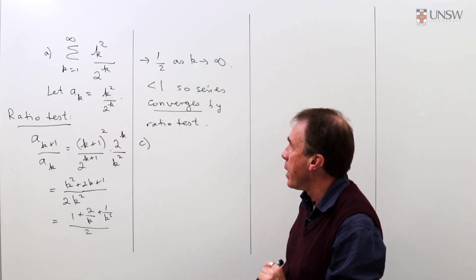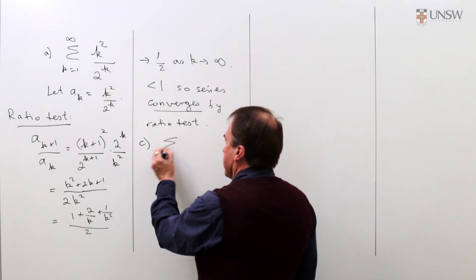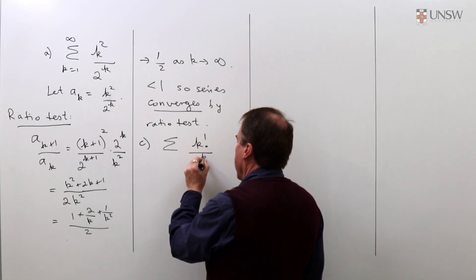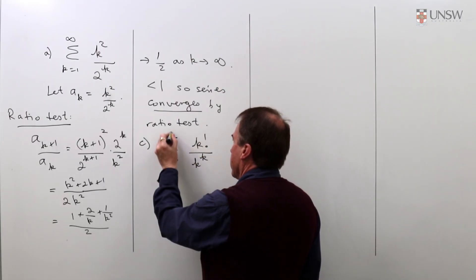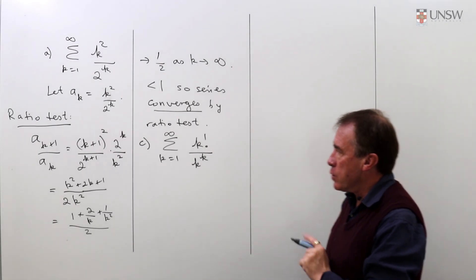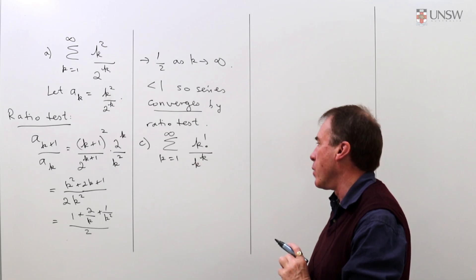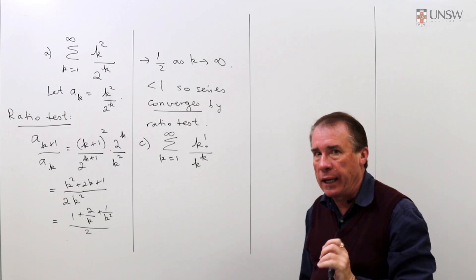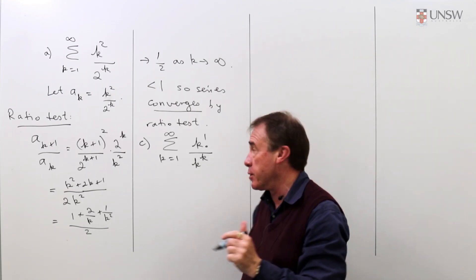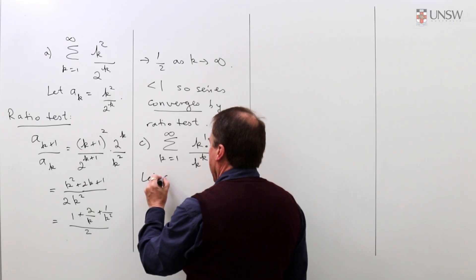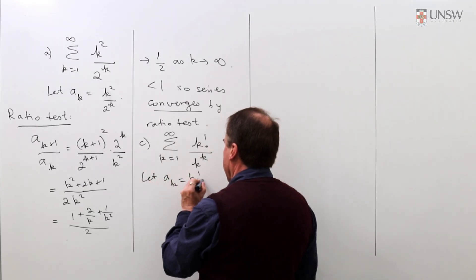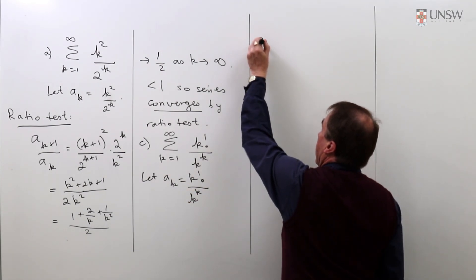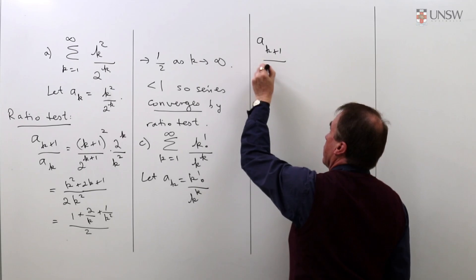In this one we're looking at sigma of k factorial over k to the power k where k goes from 1 to infinity. This one is somewhat more tricky but again you've got factorials and exponentials so it really lends itself to using the ratio test. We let a sub k equal k factorial over k to the k and look at the ratio of a sub k plus 1 over a sub k.